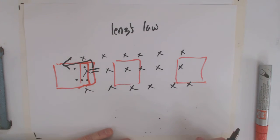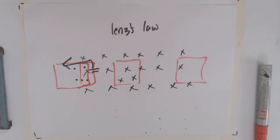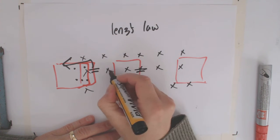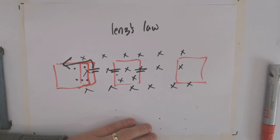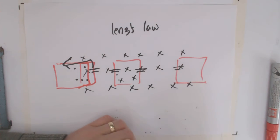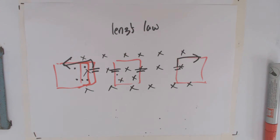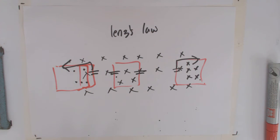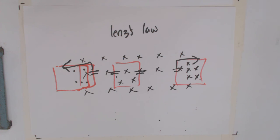Once it's in there, Lenz's Law tells us no flux is changing — no need to produce a voltage. It's a constant state of flux. And when it starts to leave, the x's are now decreasing, so what it wants to do is produce a current that flows in the other direction — because a current that flows in that direction produces x's going in. So Lenz's Law tells us exactly the same thing about a conducting loop moving in and out of a magnetic field as the Lorentz force law. The current that flows in the conducting loop will be a current that opposes the change in the magnetic field.